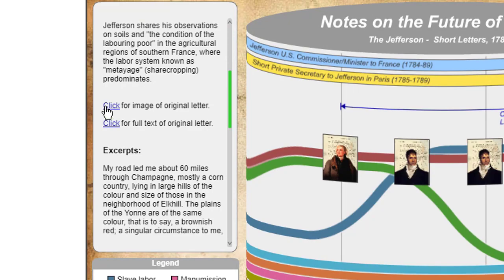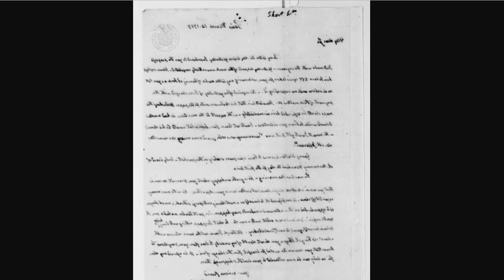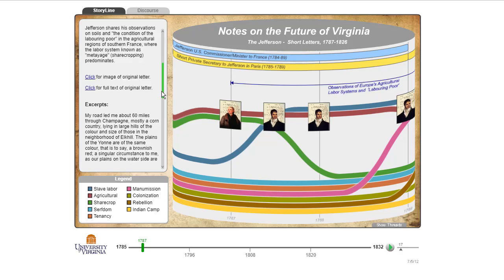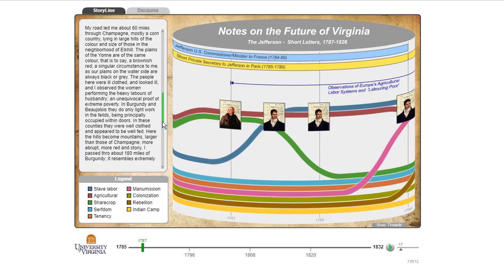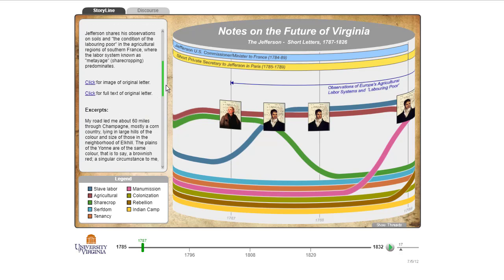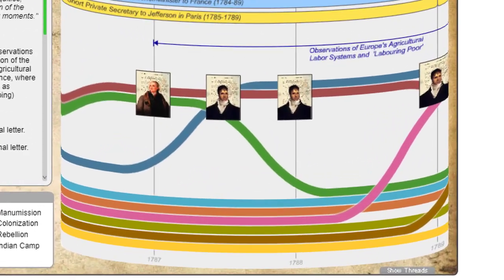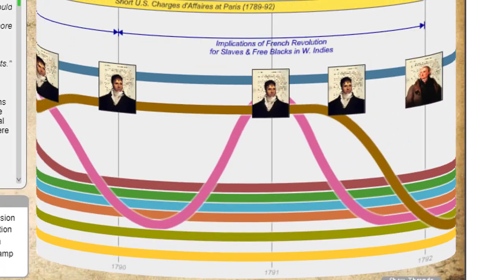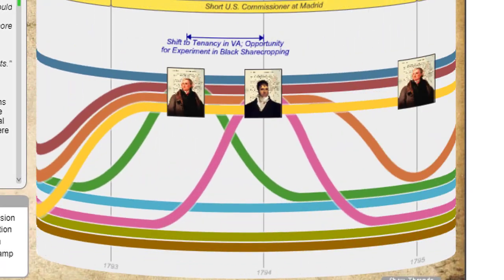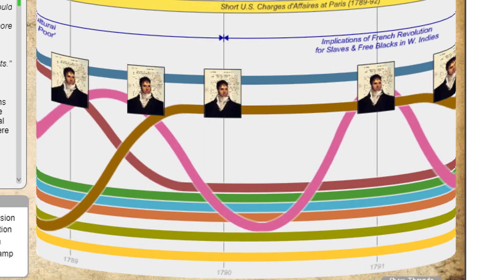Of course, you can always see the original letter. Scott came up with excerpts and came up with things that were interesting about it. And essentially what you can do is roll through this thing and see where they talked about particular ideas.